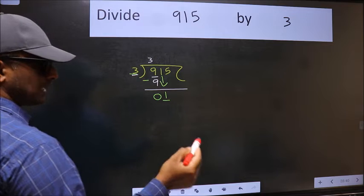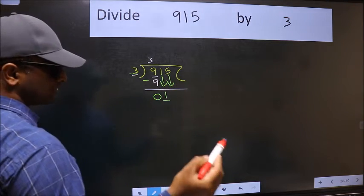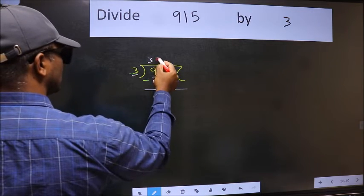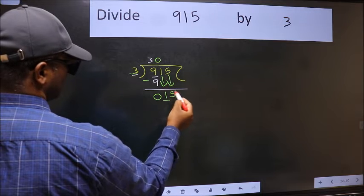So we should bring down the second number. And the rule to bring down the second number is, we should put 0 here. Then only we can bring this number down.